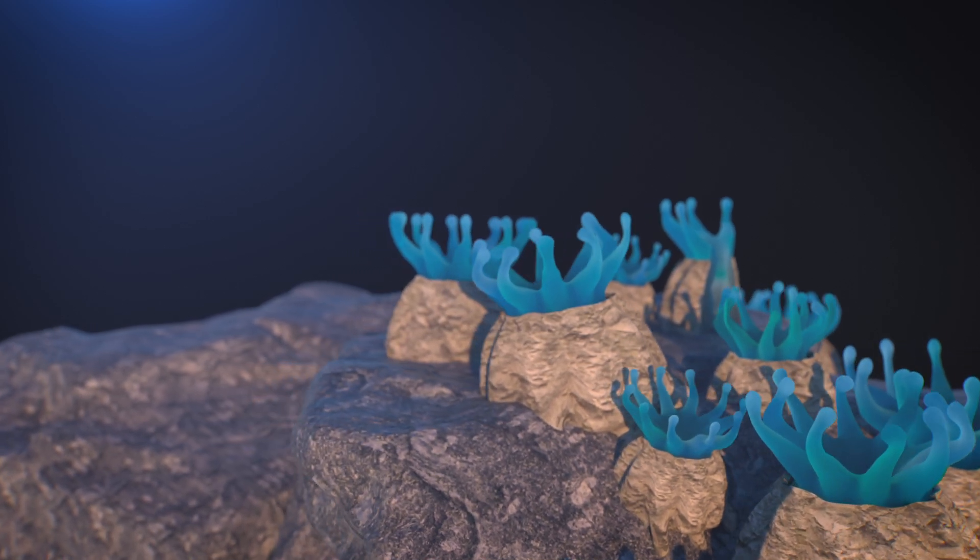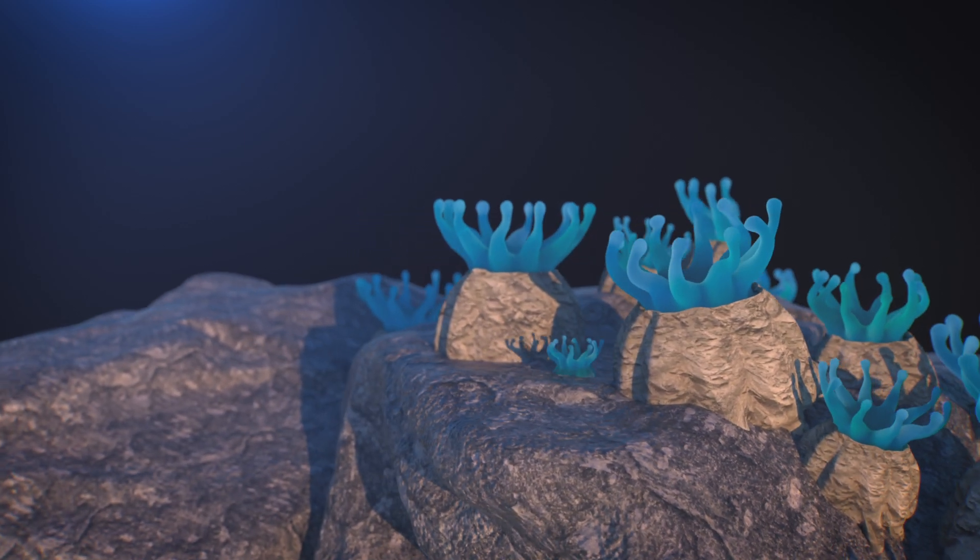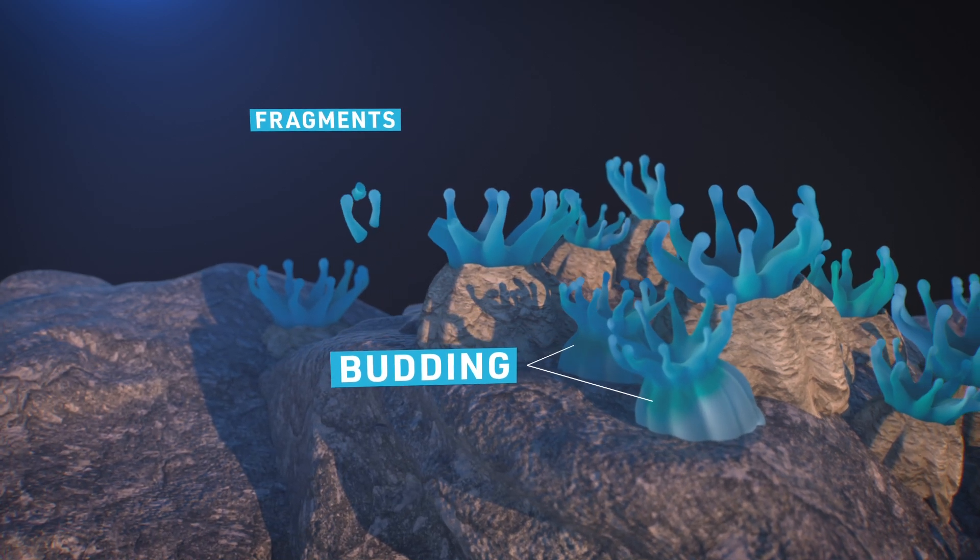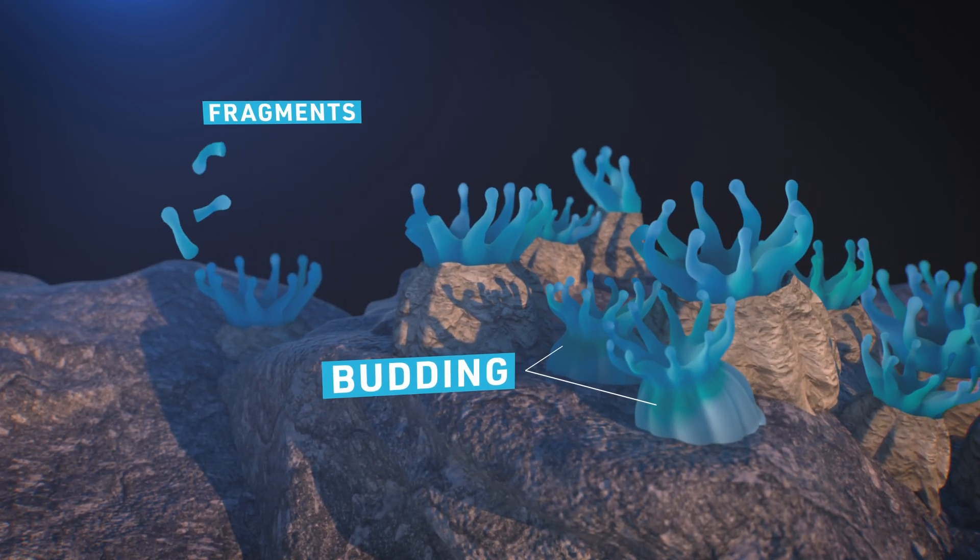The individual polyps can reproduce asexually by budding a copy of themselves or by fragments that separate and float away to attach to another substrate.